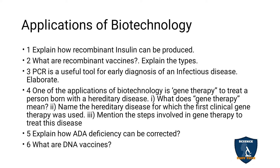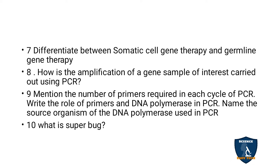Applications of Biotechnology. Explain how recombinant insulin can be produced. What are recombinant vaccines — explain its types. One application of biotechnology is gene therapy — what hereditary disease is it used for? The first clinical gene therapy — name it and mention the steps involved in gene therapy. Explain how ADA deficiency can be corrected. What is DNA vaccine? Differentiate between somatic cell gene therapy and germline gene therapy — 5 marks.